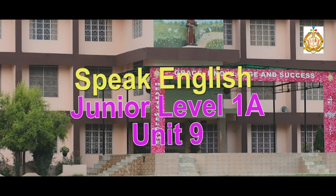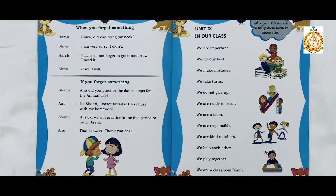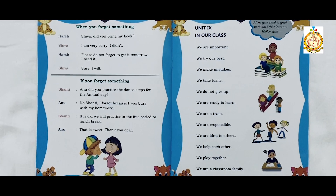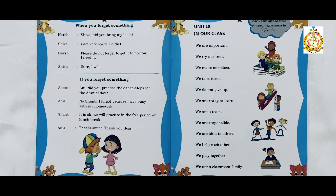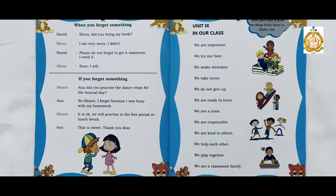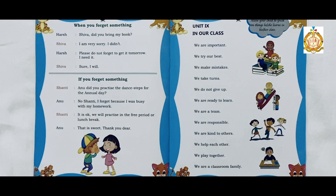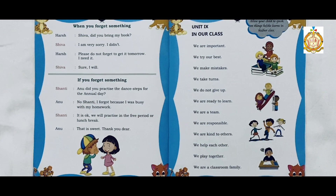Hello students, we welcome you to Junior IELTS Speak English e-learning course. Let's start now. We are going to learn Unit Number 9, namely 'In Our Class', from Level 1A Speak English Book of the Junior category. This topic helps to know the correct behavior that we should follow in class, which would improve and polish your speaking skills.